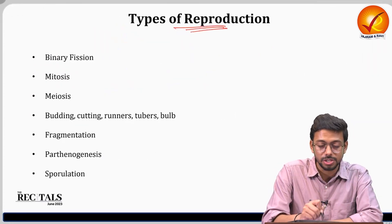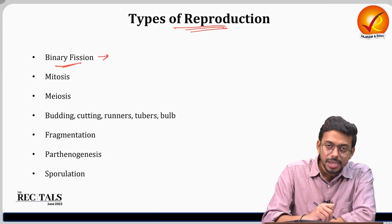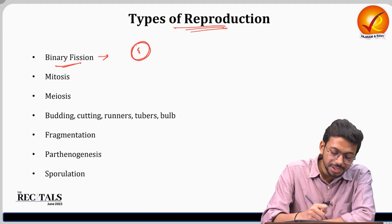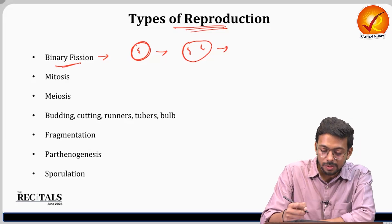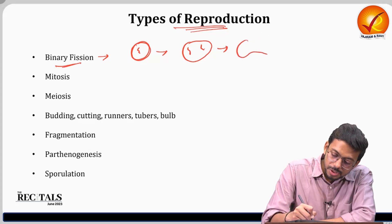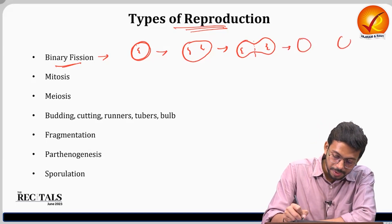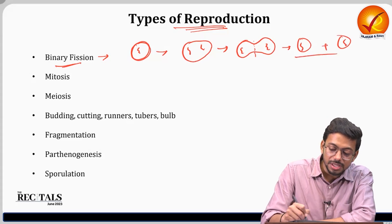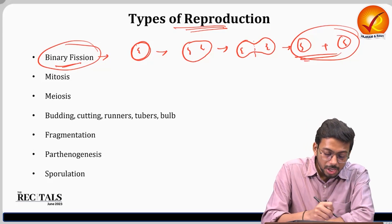Now let's look at reproduction types. Prokaryotes mainly use binary fission. In this process, the DNA replicates within the cell, and through cytokinesis the cell divides into two, each with a copy of the DNA. Two identical cells are formed. This is how binary fission works and it is mainly found in prokaryotic cells.